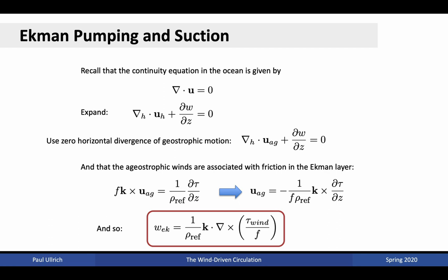Starting quantitatively, recall that the continuity equation in the ocean is given by the three-dimensional divergence of the velocity field equal to zero. This is a property arising because the fluid is essentially incompressible. We can expand this in terms of the horizontal divergence, shown as div u_h, and the vertical derivative of the vertical velocity, dw/dz. Using zero horizontal divergence of geostrophic motion, this reveals that the horizontal divergence is in fact the horizontal divergence of the ageostrophic wind. The ageostrophic winds are associated with friction in the Ekman layer.